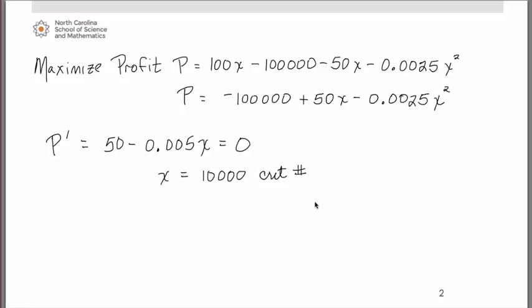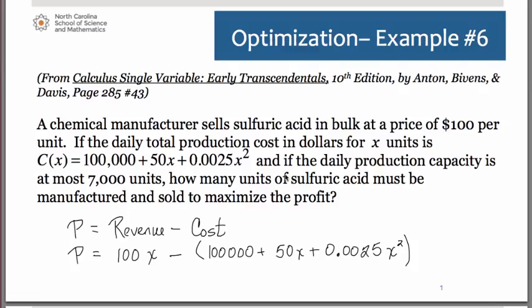We've looked at examples in which we've used the first derivative test with a number line analysis. We've seen a couple in which we've done a second derivative test, substituting the critical numbers into the second derivative to determine if we have a relative maximum or minimum. This one I'm going to use the extreme value theorem. Remember that the daily production capacity is at most 7,000 units, so really we do have a domain here.